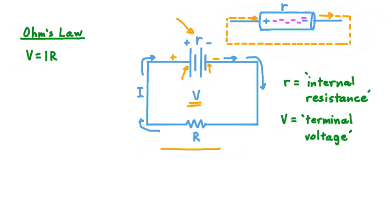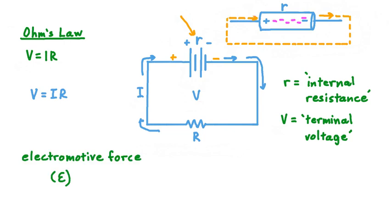The terminal voltage V is what the rest of the circuit — everything outside the battery — experiences. Since capital V already reflects the diminishment of voltage due to internal resistance, following Ohm's law, we can write that the terminal voltage equals the current I multiplied by the external resistance R. But what about the voltage across our battery before internal resistance has taken a chunk out of it? There's a name given to that particular amount of voltage: it's the electromotive force, also called EMF for short, and typically represented using the Greek letter epsilon.